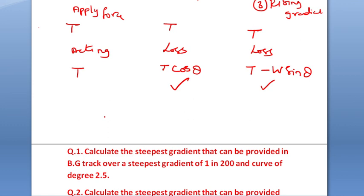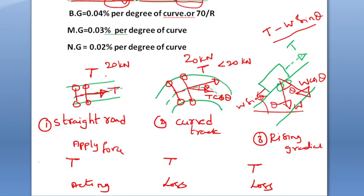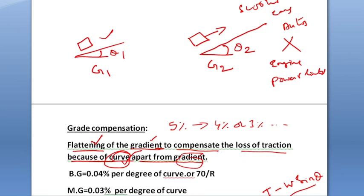So you are lowering the gradient by some amount so that the loss because of the curve is removed or overcome. This is also called curve compensation.